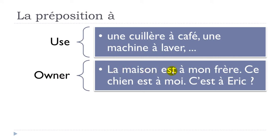À is used to express ownership. For example: 'la maison est à mon frère' — the house belongs to my brother. You can use a noun after À, or a pronoun: 'ce chien est à moi' — this dog is mine. You can also use a name: 'c'est à Éric?' — does it belong to Éric? This is a very common use of À for possession.